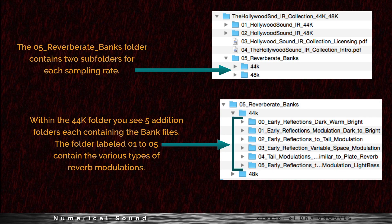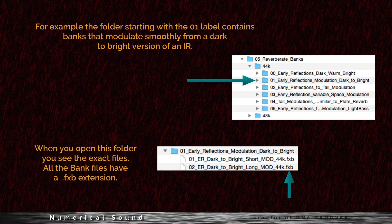The O5 Reverberate Banks folder contains two subfolders for each sampling rate. Within the 44K folder, you see five additional folders, each containing the bank files. The folders labeled 01 to 05 contain various types of reverb modulation. For example, the folder starting with the 01 label contains the banks that modulate smoothly from a dark to bright version of an IR. When you open this folder, you see the exact files. All the bank files have a .fxb extension.